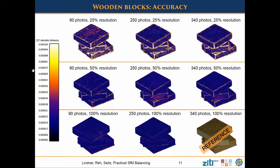What we did then: we take the reference, which is 340 pictures at 100% resolution. In one direction we downsized the resolution, and in the other direction we reduced the number of pictures. As we can see, if we reduce the picture count a little bit it does not really affect the quality much. But if we reduce the resolution, we see quite an effect on the edges — they are not so sharp anymore.